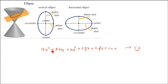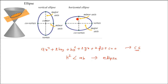Because every conic section is different, there is a relationship between h² and ab. If h² is less than ab, then the figure is going to be an ellipse. It is a form of an egg, not a circle. Circle and ellipse are related — a circle is actually a special case of an ellipse.